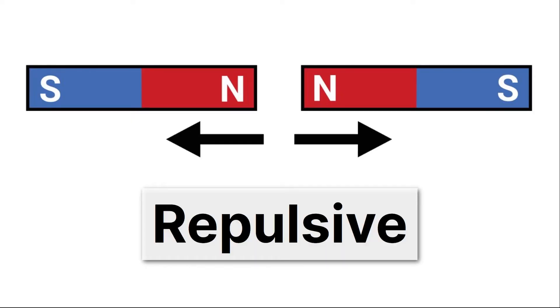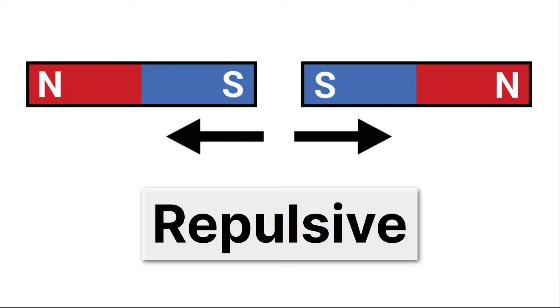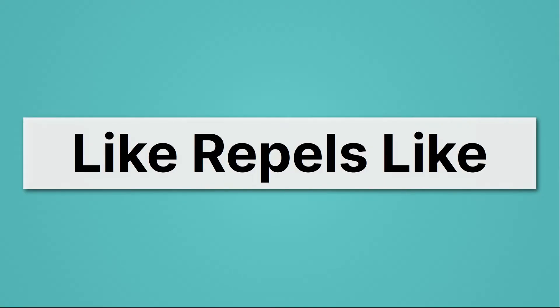On the other hand, they can also repel. When we have two north sides of the magnets pointed towards each other, we get a repulsive force. And the same thing is true when we have two south sides of the magnet facing each other. Once again, we get a repulsive force. So much like the electric force, we know that like repels like.